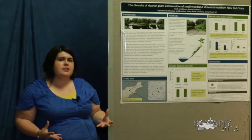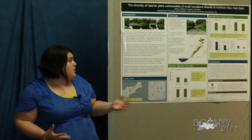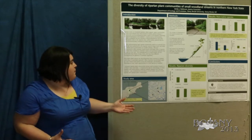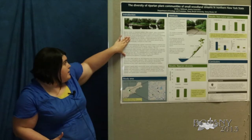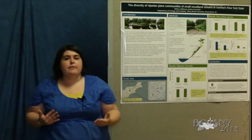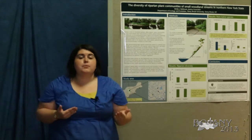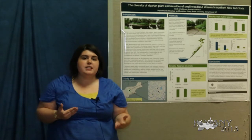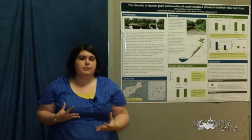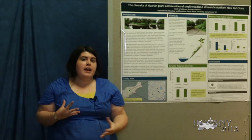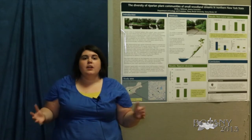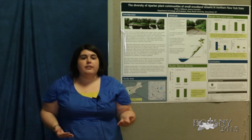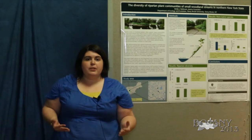This is consistent with what's been seen in larger rivers — so even though in smaller rivers the disturbance regime is a lot less predictable, it seems to be a similar pattern to what's been seen in larger floodplains where the flooding regime is a lot more predictable.